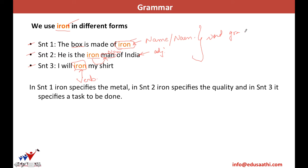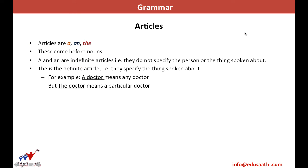Now let us move further and discuss the very first element of word grammar, which is articles. We all know that articles are three in number: A, An, and The. Before we proceed with the discussion of how to use A, An, and The, let us discuss why we need to use an article.